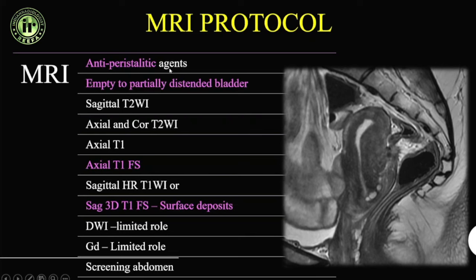Start with an anti-peristaltic agent like Buscopan and an empty or partially distended bladder. Begin with sagittal T2-weighted sequence, then axial and coronal T2, axial T1 non-fat sat, and axial T1 fat sat — because we are looking for blood products, the mainstay sequence will be T1 fat sat as blood products will appear bright.